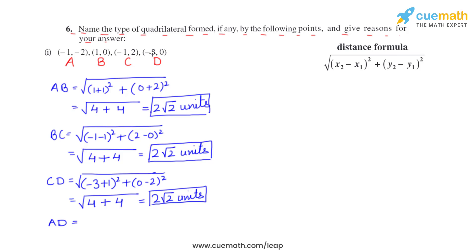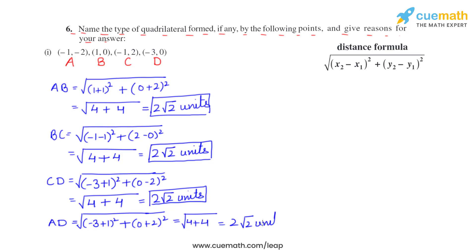Now the last side, AD: (−3 minus −1) whole square plus (0 minus −2) whole square = (−2)² + (2)² = 4 + 4 = 8, so AD = 2√2 units. All four sides are equal, so it could be a square or a rhombus. We need to check the diagonals — if they are equal it's a square, otherwise a rhombus.